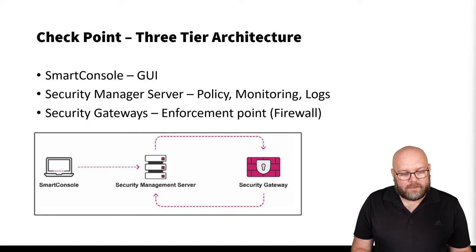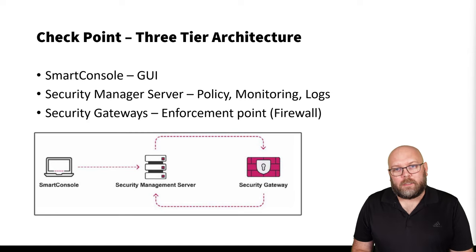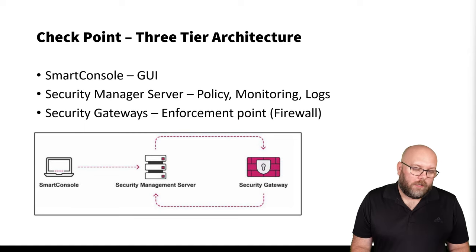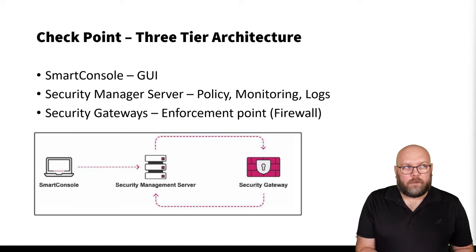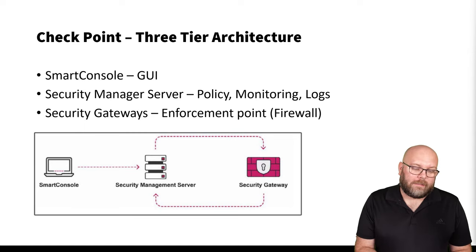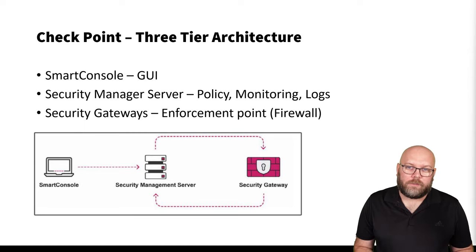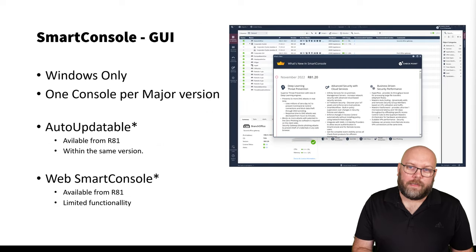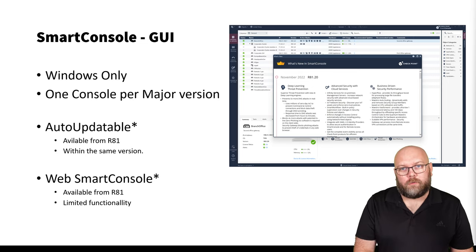Keep in mind it's the version of the management server that matters, because the Smart Console connects to the management station, not directly to the gateway. So you can have a management station running a higher version like R81.20 while the gateway runs a lower version, and the management station can still control it. There is a compatibility matrix available for this. Thankfully, the Smart Console is now auto-updatable starting from R81 — it updates itself when Check Point releases new fixes, still only within the major version.